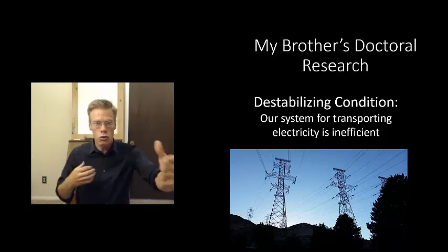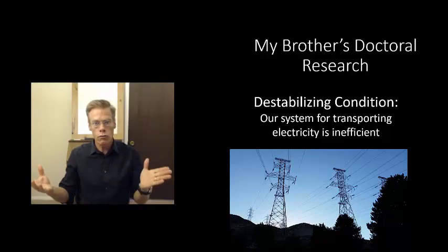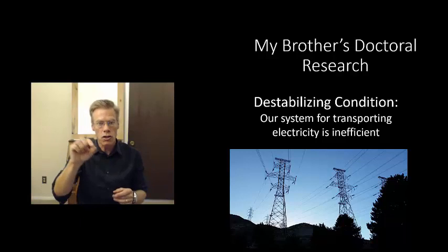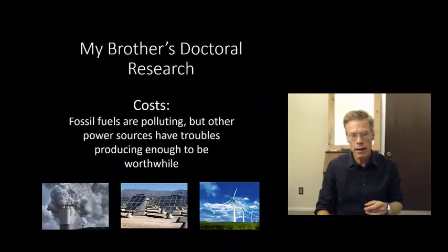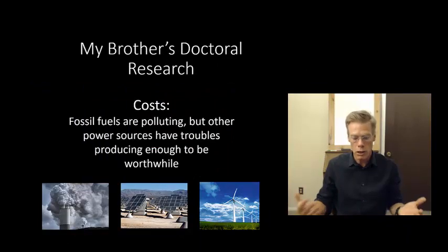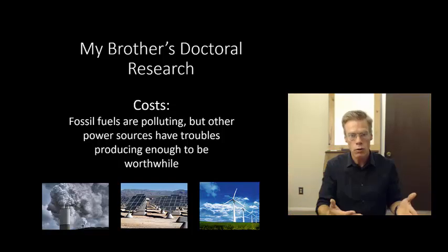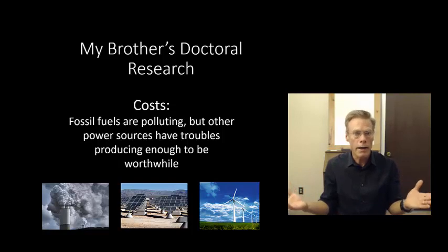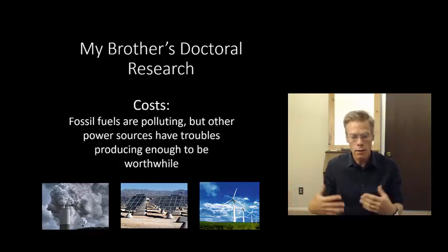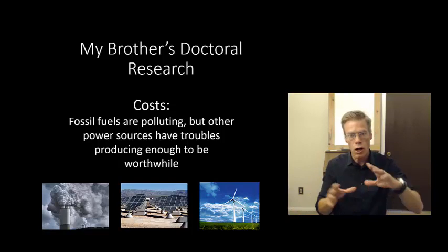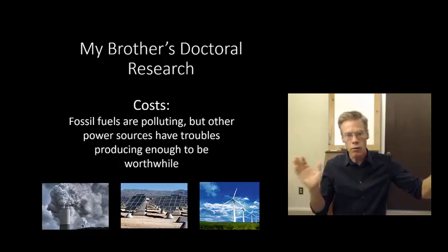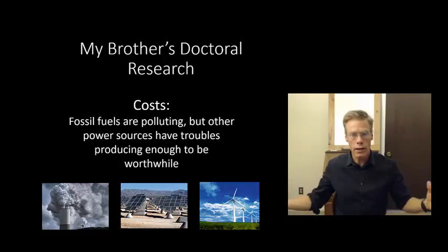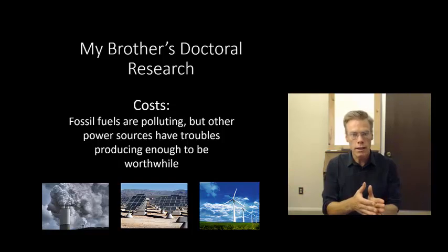But the destabilizing condition is that our system for transporting electricity is inefficient. We lose a lot of the electricity from the source to the outlet in our wall through friction, basically. So as it goes down those wires, a great deal of it gets lost. And the costs of that are that fossil fuels are polluting. And so we're wasting all that electricity we're producing with fossil fuels, which means we're polluting a lot more than we need to. And then furthermore, other power sources, clean power sources, have troubles producing enough electricity to be worthwhile. So solar plants where you've got these massive number of solar panels out in the desert, or we've got wind, but generally those are located far away from the people who are using it. And again, we're losing too much of that electricity. And so they're not viable.